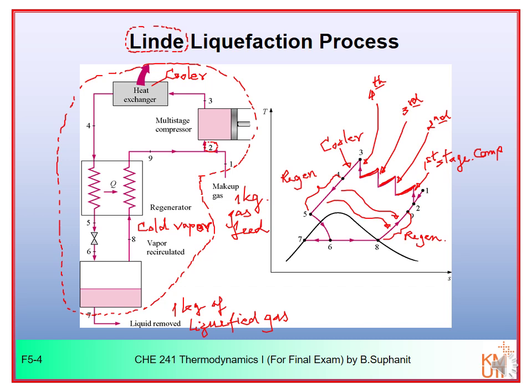After exiting the regenerator, the gas is flashed through an expansion valve — five expanded to six (JT valve). At point six it has entered the two-phase region as a vapor-liquid mixture. You separate vapor from liquid using a flash drum: number eight is vapor, number seven is liquid product. The cold vapor at eight passes through the regenerator, exits at nine, and mixes with makeup gas to become point two — the compressor inlet again.